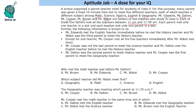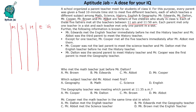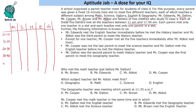We will make a slot grid with the subjects — Maths, Science, History, English, and Geography — across the columns. There are 5 different time slots: 11:00–11:10, 11:10–11:20, 11:20–11:30, 11:30–11:40, and 11:40–11:50. So 5 slots for these 5 subjects.